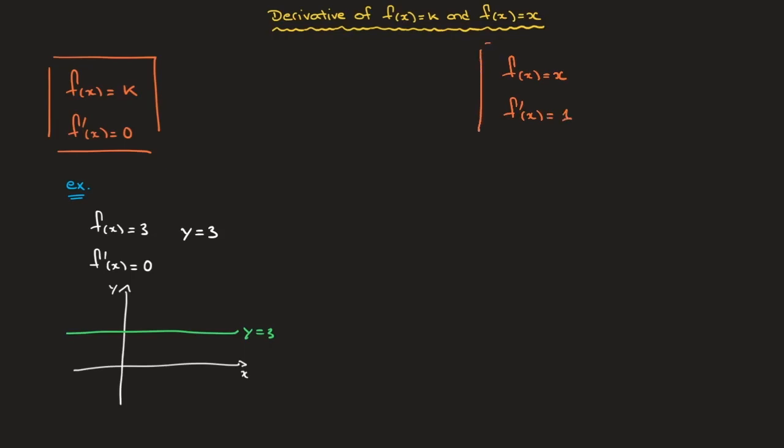And again, I'll go ahead and box that result. And in this case, there isn't really much of an example I can state, other than just copying the formula to write that if f of x equals x, then the derivative f dash of x is equal to one.